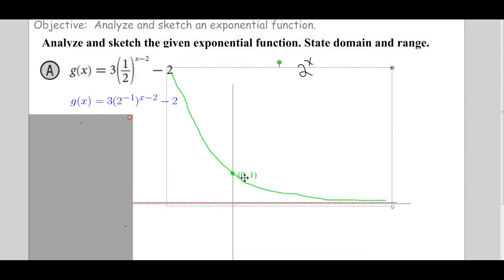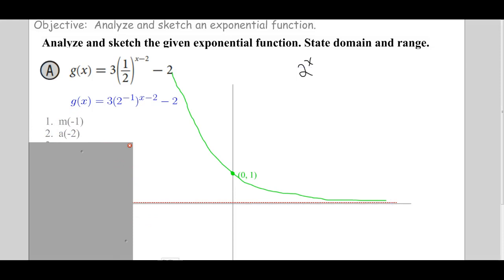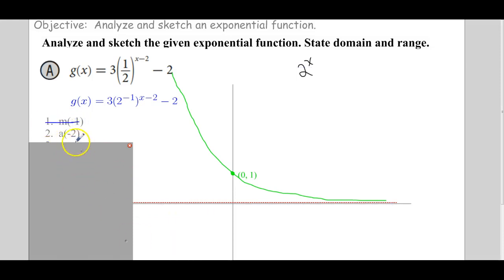So this function is a horizontal reflection of the 2 to the x function. There is (1/2) to the x. Now, what are we doing to the (1/2)^x function? We're adding negative 2 on it.